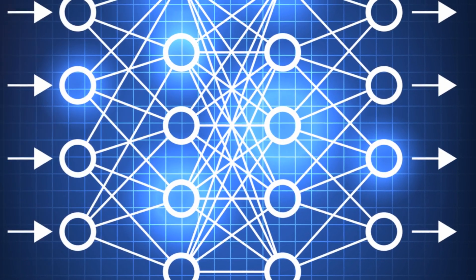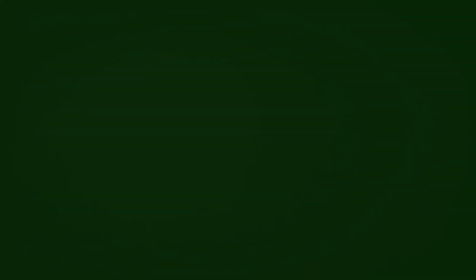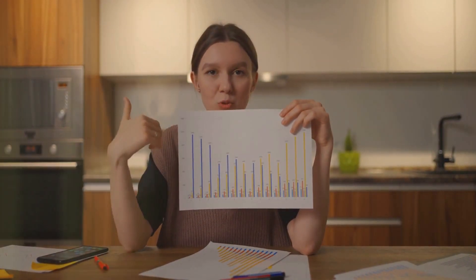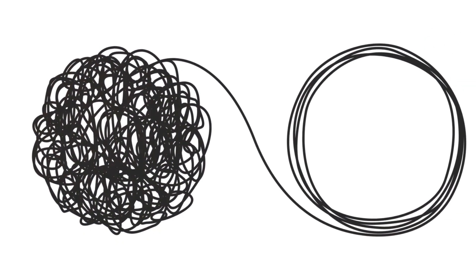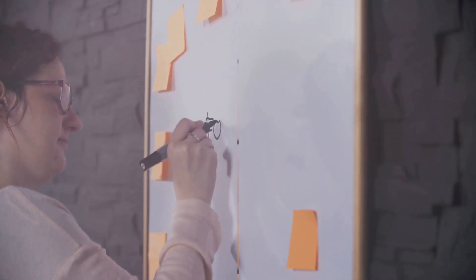Principal Component Analysis, or PCA, is a statistical procedure that uses an orthogonal transformation to convert a set of observations of possibly correlated variables into a set of values of linearly uncorrelated variables called Principal Components. Sounds complex, doesn't it? But worry not, we'll break this down into simpler terms.